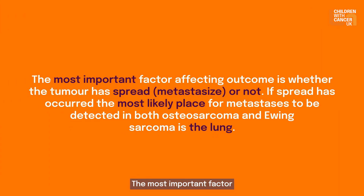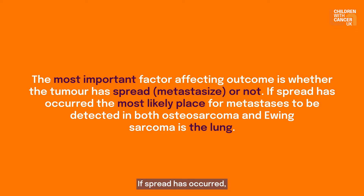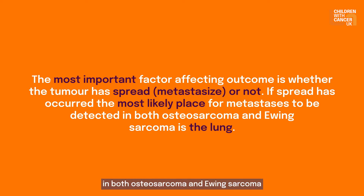The most important factor affecting the outcome of children is whether or not the tumour has spread. If spread has occurred, the most likely place for metastases to be detected in both osteosarcoma and Ewing sarcoma are the lungs.